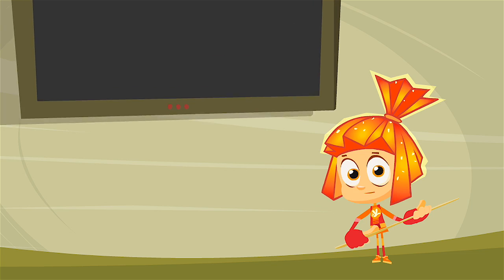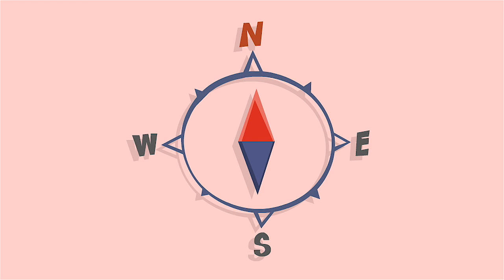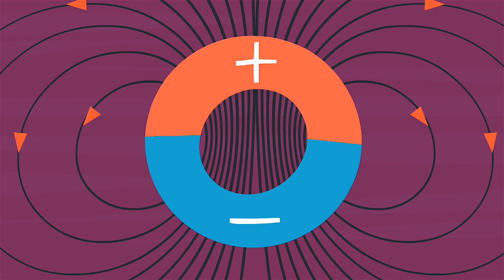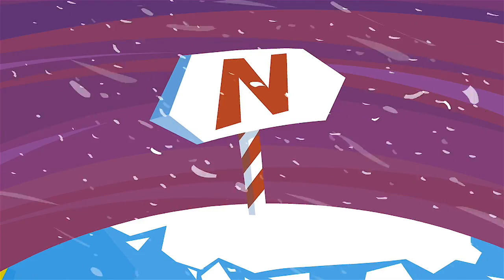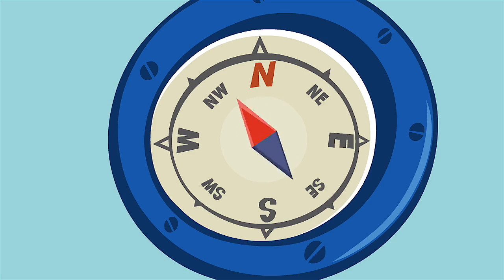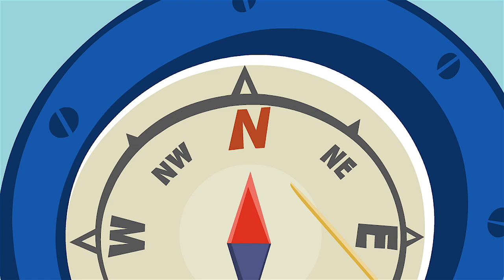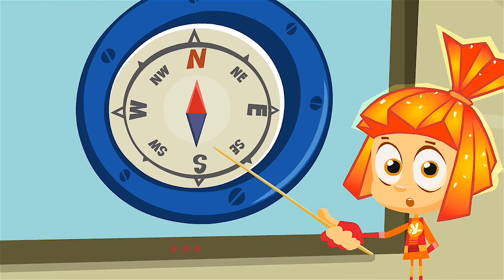A compass is a special tool that helps sailors and pilots know which direction they're traveling, whether in the air or on the sea. Our planet is like a big magnet with two poles - the North Pole and the South Pole. These magnetic poles help the needle in the compass find its way. The needle is magnetized, so one end is attracted to the North magnetic pole and points at it, while the other end always points towards the South.